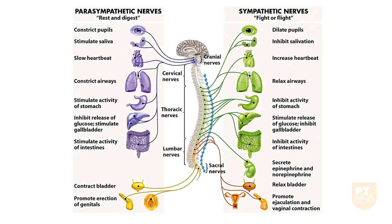The sympathetic nervous system is considered the fight or flight system — it prepares our body for an emergency. Arteries to skin and intestines are constricted and those to skeletal muscle are dilated to divert blood to muscles that could help us run away, for example from a bear. Fibers arise from the thoracic and lumbar portions of the spinal cord, T1 to L1.